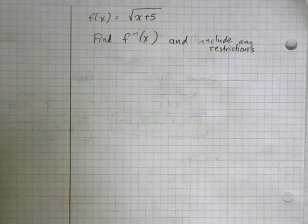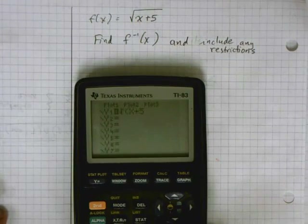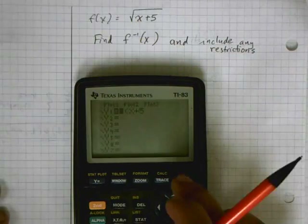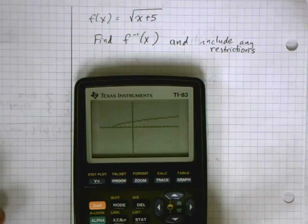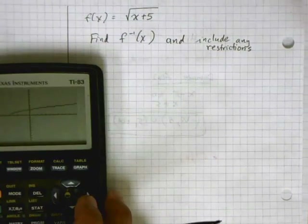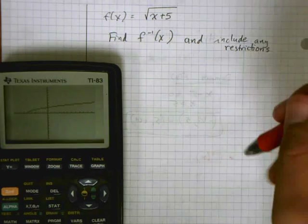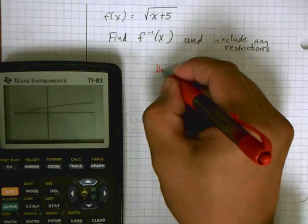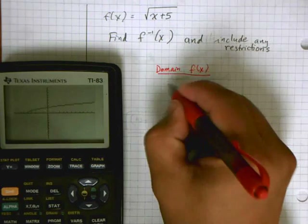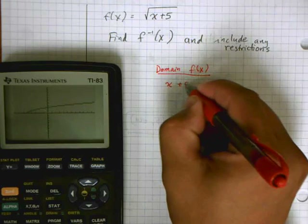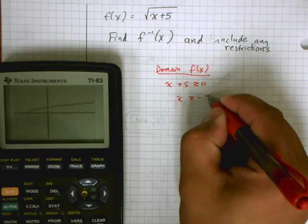Before we go any further, I'm going to graph our original function. f of x equals the square root of x plus 5. If you graph it, you see this right here, and we can look at both the graph and the equation and conclude that the domain — x plus 5 has to be greater than or equal to 0, so x has to be greater than or equal to negative 5.